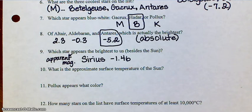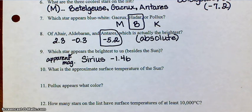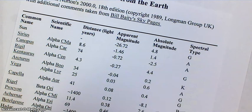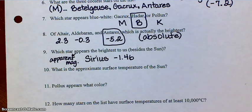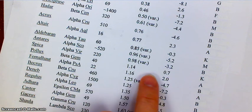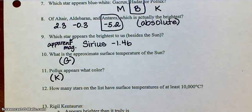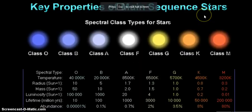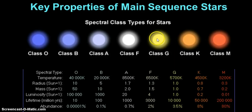I'm going to do 10 and 11 together, because they're both dealing with the star's spectral classification, and we're going to have to use that chart from the slideshow. Number 10 asks: what's the approximate surface temperature of the sun? If you look on the chart, the sun is a spectral type G. Number 11 asks about Pollux — Pollux appears what color? Pollux is down here further in the chart, and Pollux is a spectral type K. So the sun is a G, Pollux is a K — let's keep that in mind. The sun is a G, which means it's yellow, but they're asking for the temperature. G stars are approximately 5,700 Kelvin, so the surface temperature of the sun is about 5,700 degrees Kelvin.